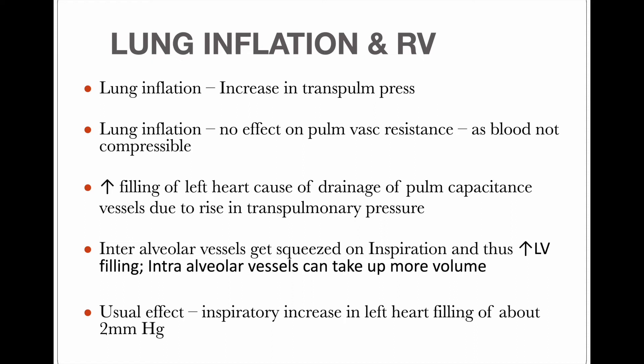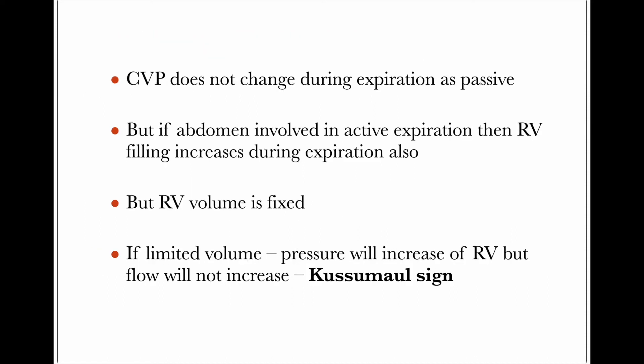The extra-alveolar vessels — present between the alveoli — are not compressed; they can take up more and more volume. The usual effect is an inspiratory increase in left heart filling of about 2 mmHg due to draining of the intraalveolar vessels into the left side of the heart. The CVP does not change during expiration as it is passive. But if the abdomen is involved in active expiration, right ventricular filling increases during expiration also. However, RV volume is fixed, so pressure will increase but flow will not — this is called the Kussmaul sign.